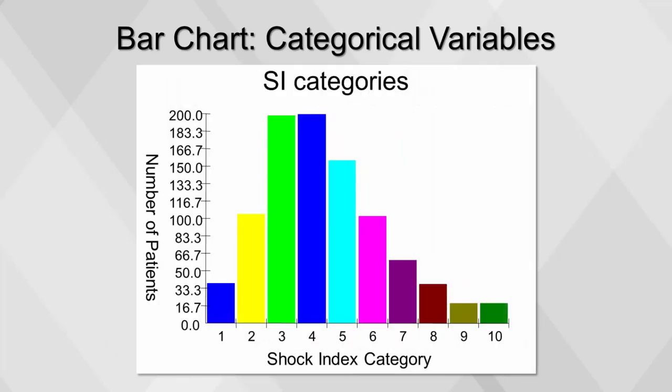This chart depicts shock index, which is the ratio of heart rate to blood pressure and should lie between 0.5 and 0.8. The higher it is, the greater the risk. Shock index is an ordinal categorical variable. The vertical bars here represent the number of patients in each category.